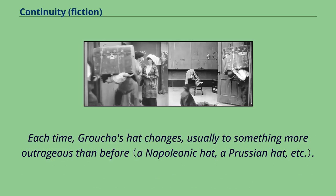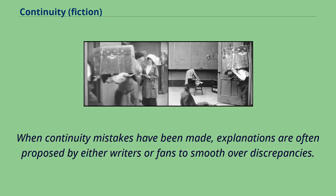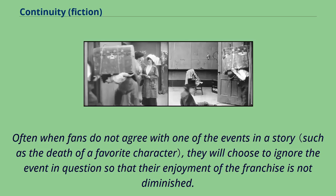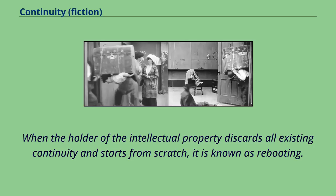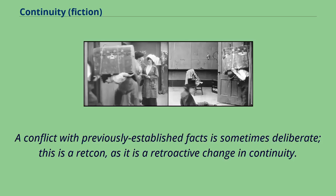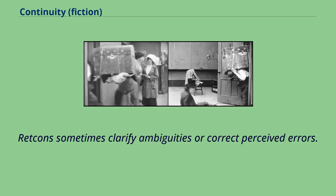When continuity mistakes have been made, explanations are often proposed by either writers or fans to smooth over discrepancies. Fans sometimes make up explanations for such errors that may or may not be integrated into canon — this has come to be colloquially known as fanwanking. Often when fans do not agree with one of the events in a story, they will choose to ignore the event so that their enjoyment of the franchise is not diminished. When the holder of the intellectual property discards all existing continuity and starts from scratch, it is known as rebooting. Fans call a less extreme literary technique that erases one episode the reset button. A conflict with previously established facts is sometimes deliberate — this is a retcon, as it is a retroactive change in continuity. Retcons sometimes clarify ambiguities or correct perceived errors.